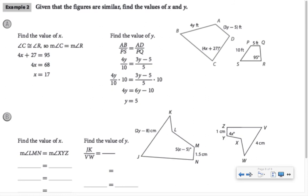To find the value of Y, they set up a proportion because Y is a part of a segment length. They did AB is to PS, so 4Y over 10, equals AD to PQ. So that's the 3Y minus 5 over 5. Then they multiplied both sides by 10, which might not be the way you would solve that proportion. Most of you probably would have cross-multiplied. That's fine. You'd end up with the same answer in the end.